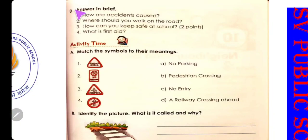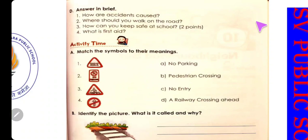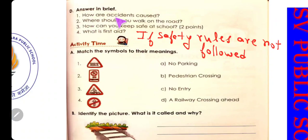Now let us go to question Part D: answer in brief. मतलब brief/short में answer करना है। Number one: How are accidents caused? How मतलब कैसे, accidents मतलब पता ही है, caused मतलब होना। Accidents कब होते हैं? यदि safety rules follow नहीं करते हैं। In English: if safety rules are not followed.